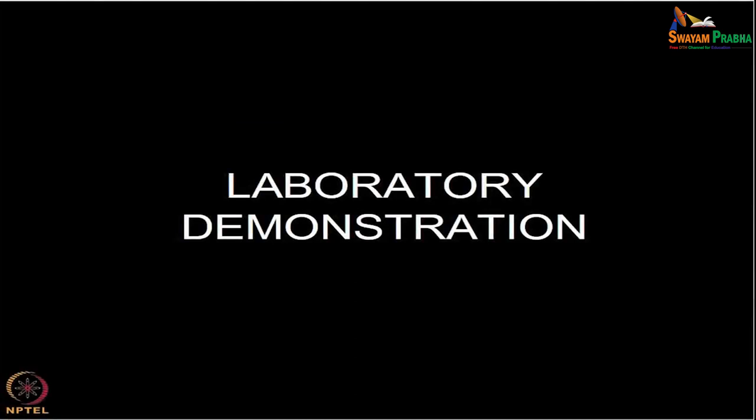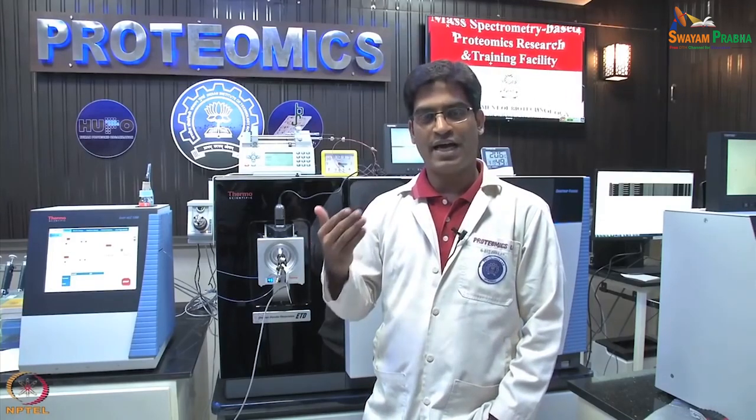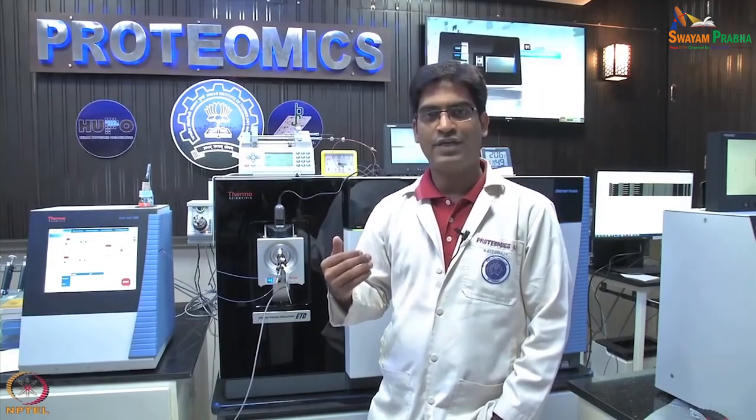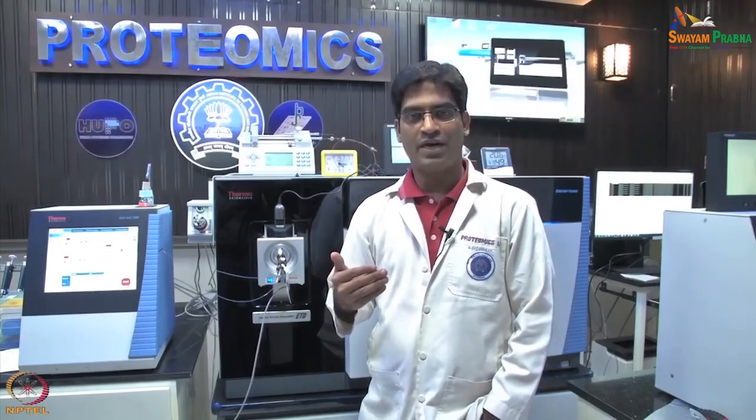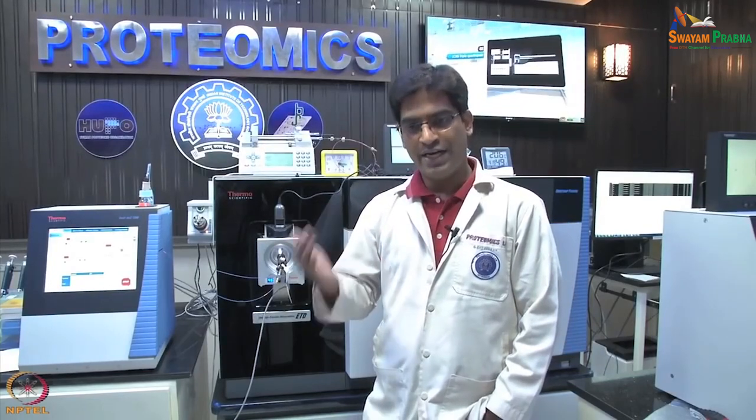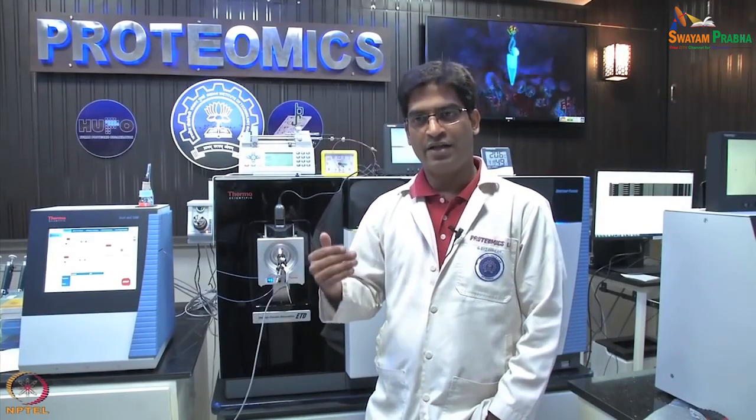Let us start the Orbitrap MS demonstration session. I am Sai Charent, a doctoral fellow in Dr. Sanjeeva Srivastava's lab. I will take you through the basics of mass spectrometry and how this instrument can be used for different proteomics experiments. The mass spectrometer consists of three components: the ionization source, the analyzer, and the detector. However, for proteomics experiments, there is also a need for an upstream component to separate complex mixtures of proteins.